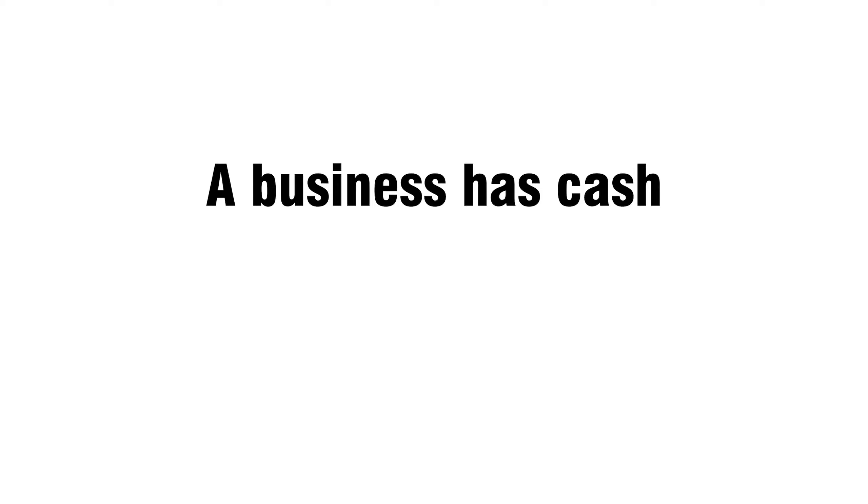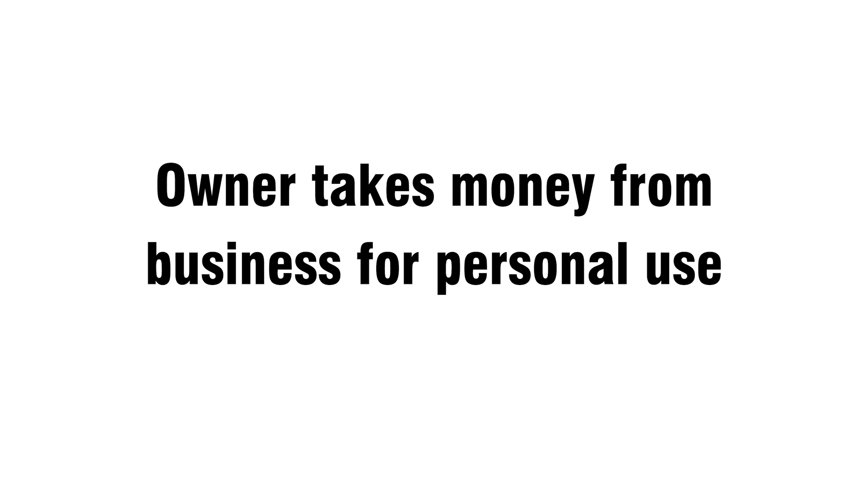Activity nineteen: a business has cash. Cash account. Activity twenty: the owner takes money from the business for personal use. Drawings account.